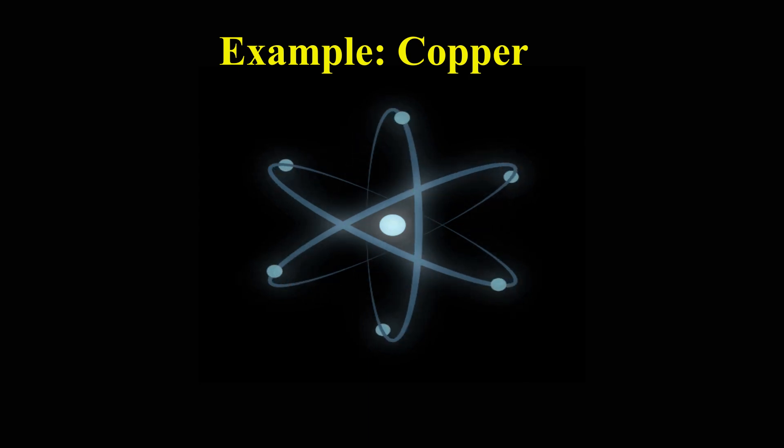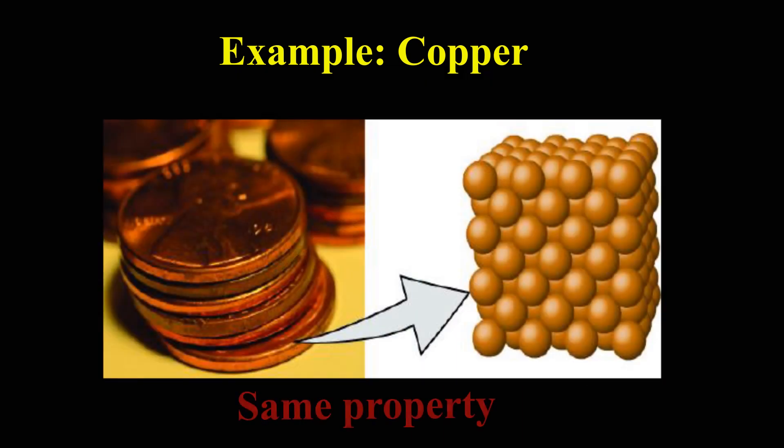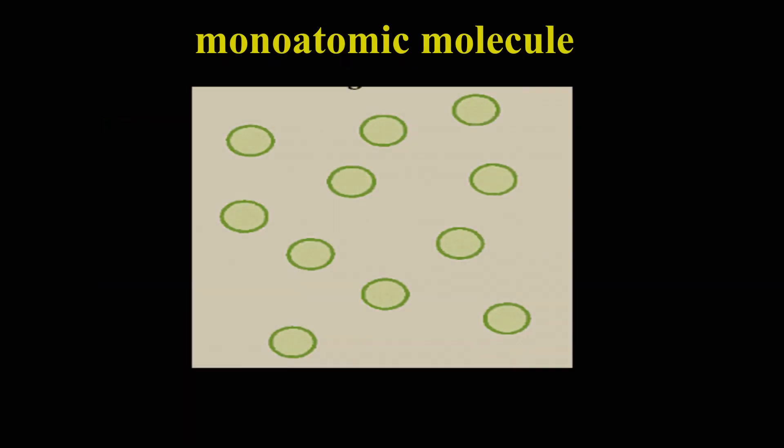Let's try to understand with an example. In copper, various copper atoms bind together to form the copper we see. Each copper atom has the same property as the larger copper matter. But in case of monoatomic molecules, atoms do not make any bond with similar or different types of atoms. They remain independent.